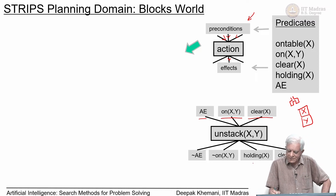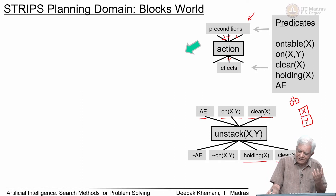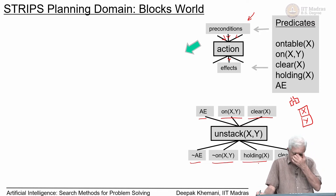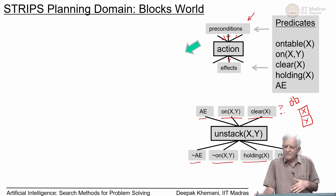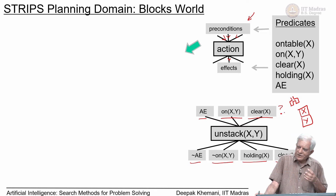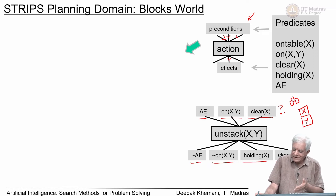The unstack action has positive and negative effects. The positive effects are: holding(x) becomes true and y becomes clear, because you have lifted x from the top of y. The negative effects are: arm-empty is no longer true (because you are holding x), and x is no longer on y. We will come back to what happens to clear(x) when the block is held — whether it is clear or not — especially when we consider a two-armed robot. For the moment it does not matter, and we will return to it later.